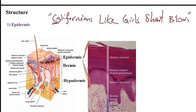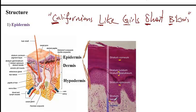The order of the epidermis layers from outside to inside is: stratum corneum, stratum lucidum, stratum granulosum, stratum spinosum, and finally stratum basale.